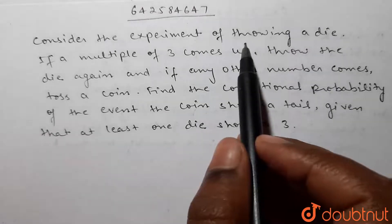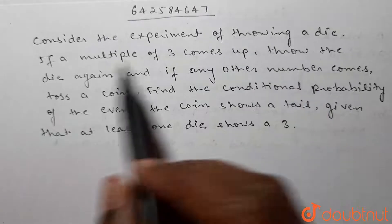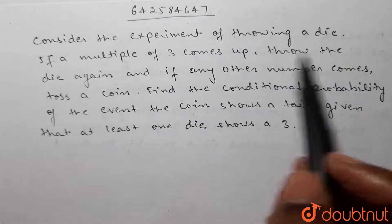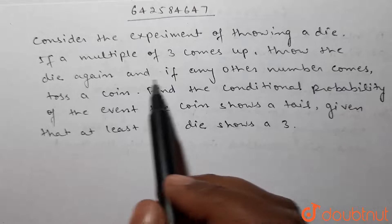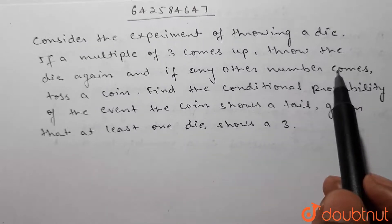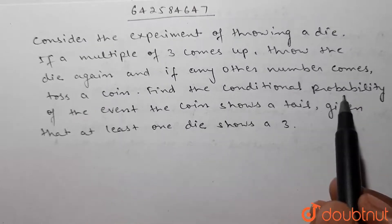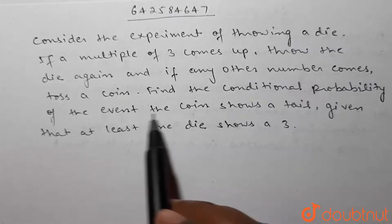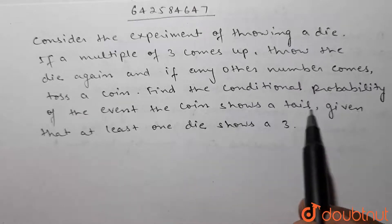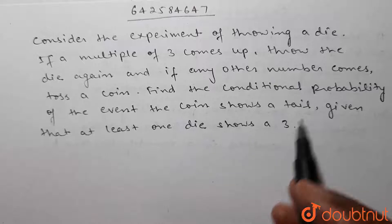Consider the experiment of throwing a die. If a multiple of three comes up, throw the die again, and if any other number comes, toss a coin. Find the conditional probability of the event: the coin shows a tail, given that at least one die shows a three.